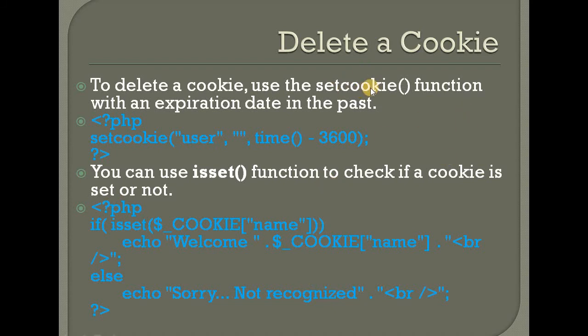To delete a cookie, you use the setcookie() function with an expiration date in the past. You give the cookie an expiration date in the past and the cookie will expire and be deleted. You set the cookie at a time and remove it by setting the time to a past value.